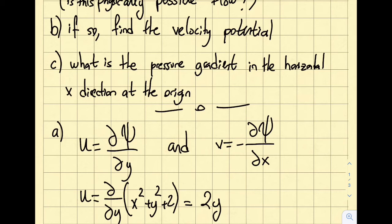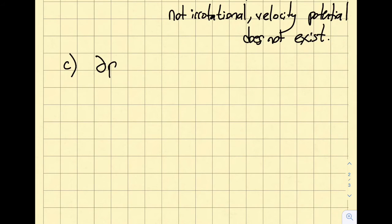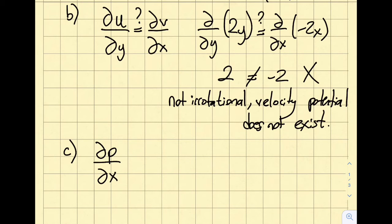For the last part, the question asks for the pressure gradient in the horizontal x-direction at the origin (0, 0). The pressure gradient means ∂p/∂x. Can I find this using Bernoulli's equation? No — Bernoulli's equation gives the relation between two pressure values; it does not give the rate of change of pressure in a particular direction. Furthermore, I cannot use Bernoulli's equation between any two points because, as found in Part B, this flow is not irrotational.